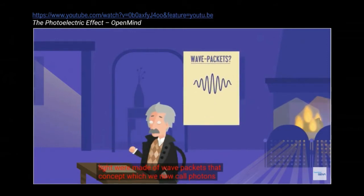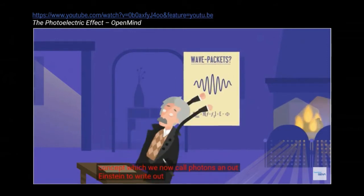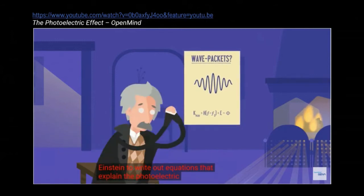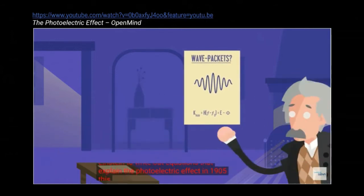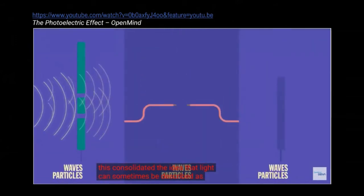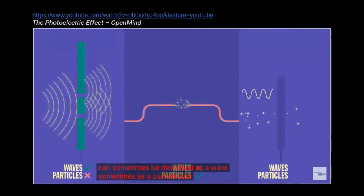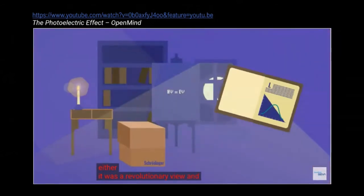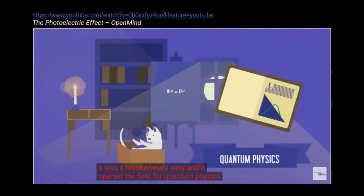That concept, which we now call photons, allowed Einstein to write out equations that explain the photoelectric effect in 1905. This consolidated the idea that light can sometimes be described as a wave, sometimes as a particle, and sometimes as either. It was a revolutionary view, and it opened the field for quantum physics.